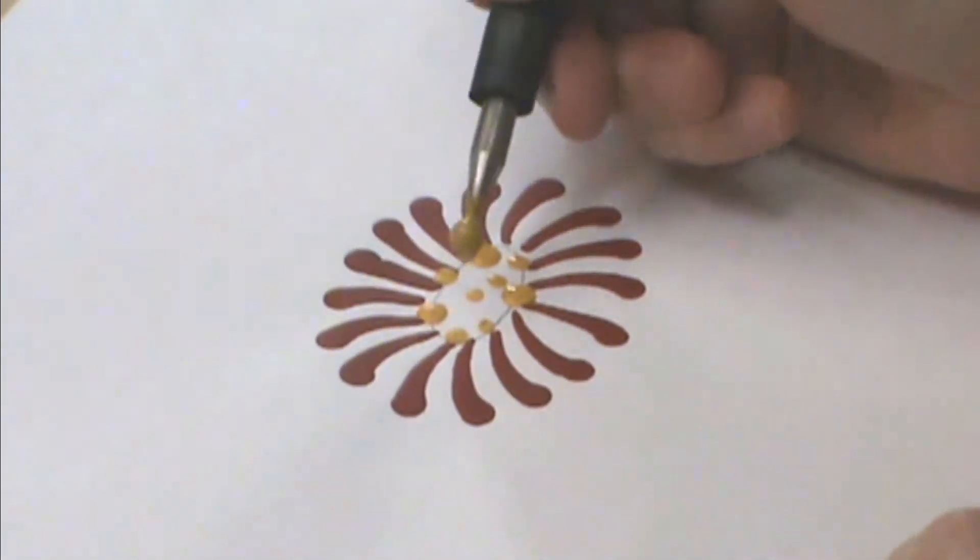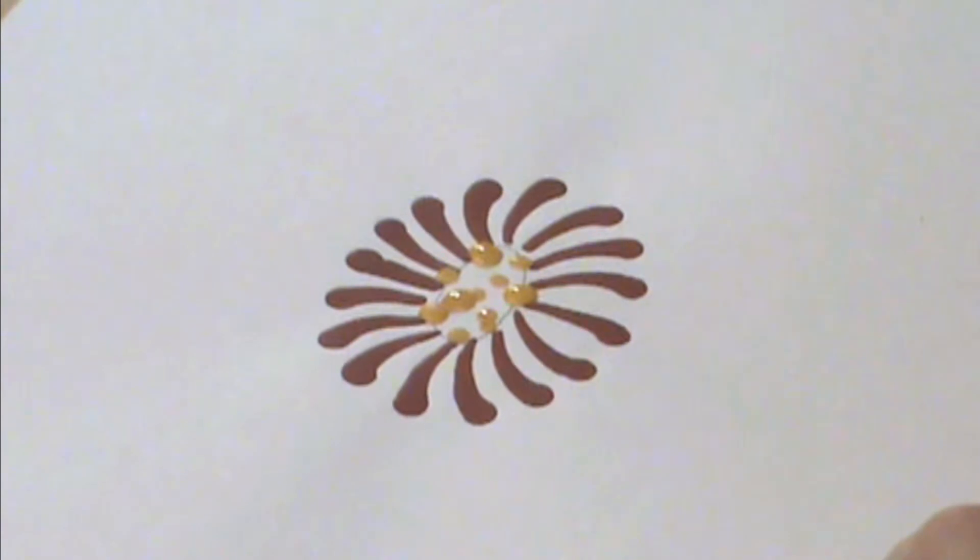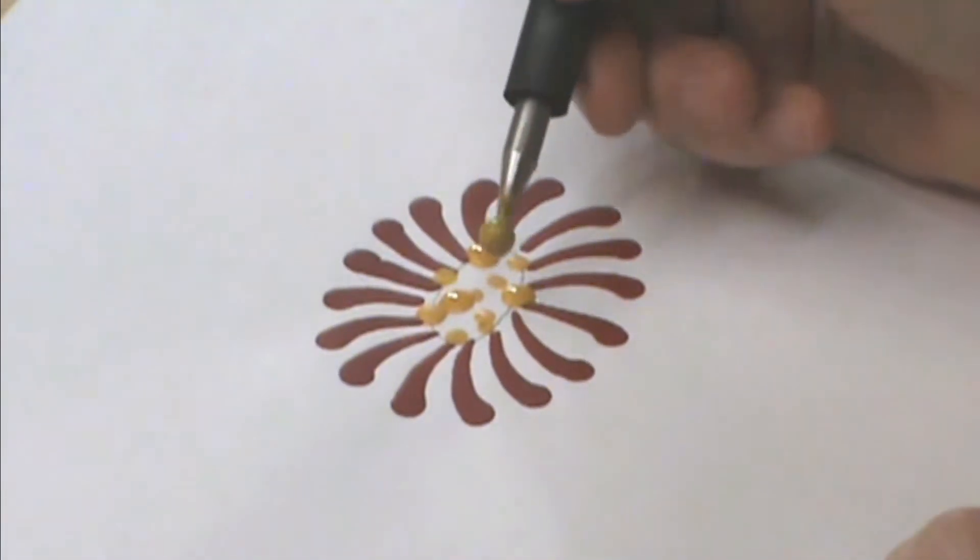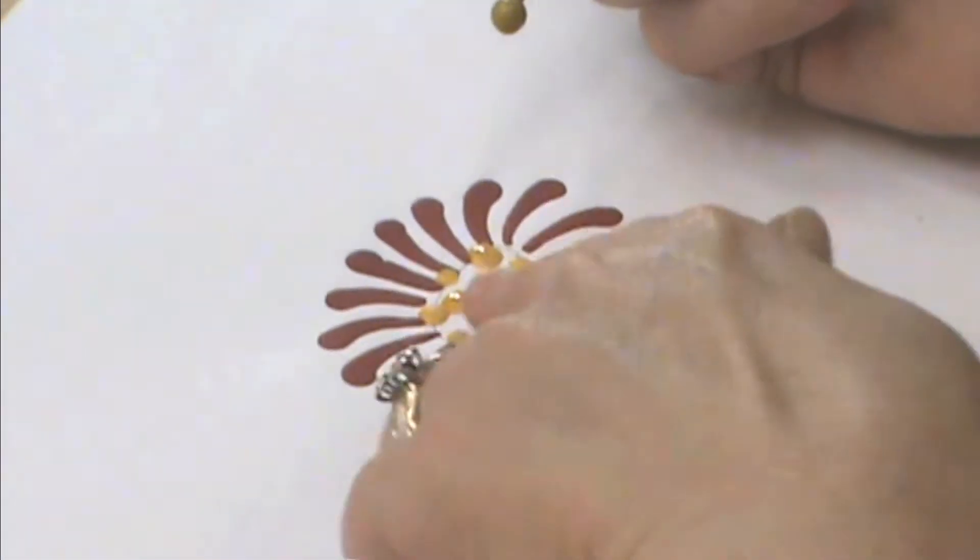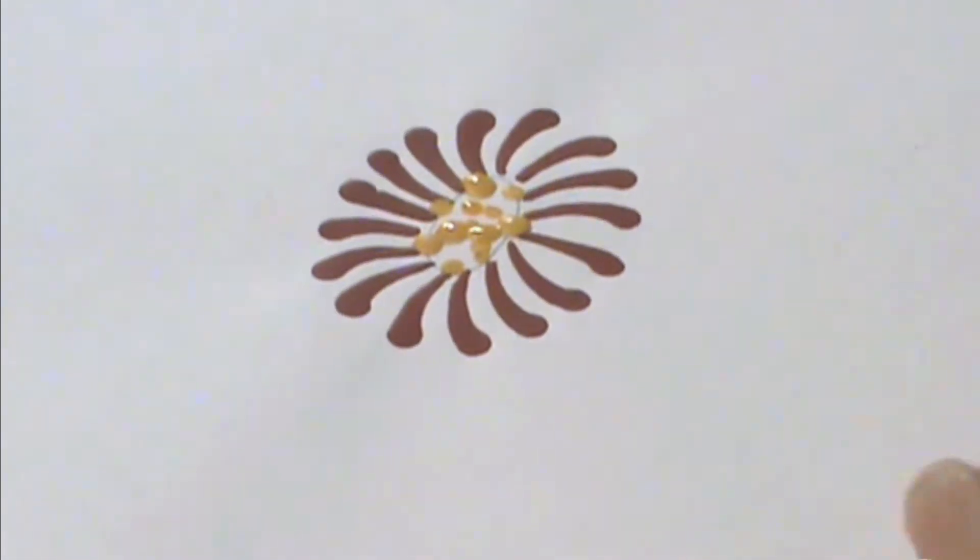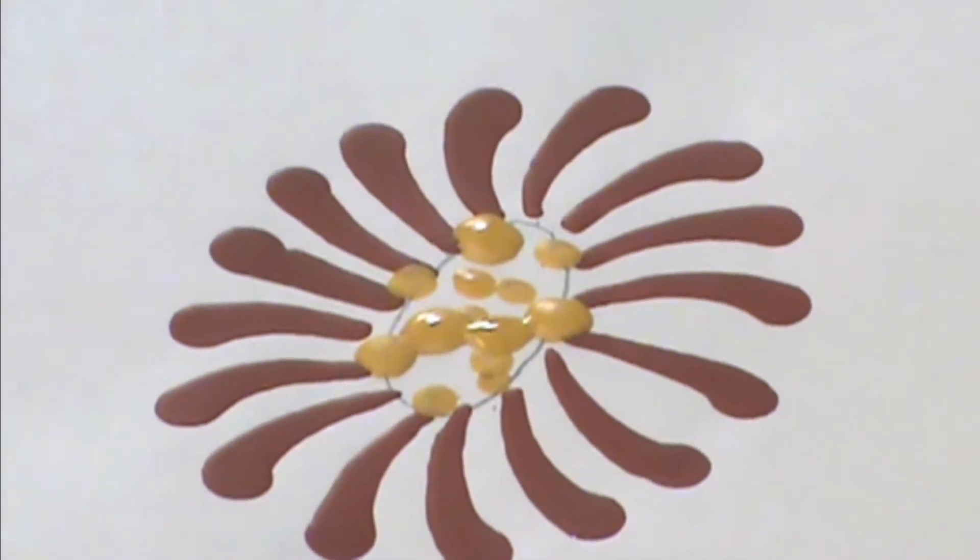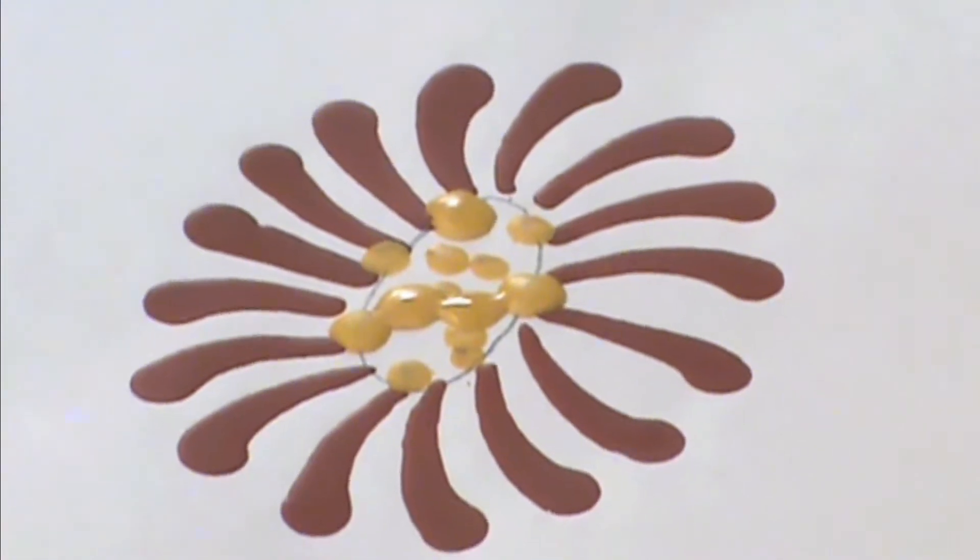You don't want your dots to touch until they start to dry. Otherwise the wax all runs together like that and you don't get individual dots, so that's the reason that we do that. And you could do these all yellow.